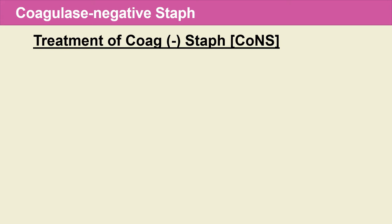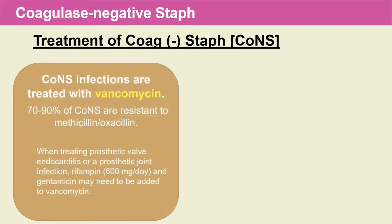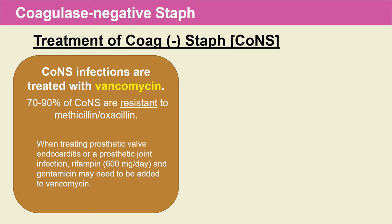How do we treat coagulase-negative staph infections? CoNS infections are treated with vancomycin because 70 to 90% of CoNS are resistant to the semisynthetic penicillins — methicillin and oxacillin. So whenever we get a CoNS infection, we need to resort to vancomycin. Also, when treating prosthetic valve endocarditis or prosthetic joint infection caused by CoNS, we need to add rifampin and gentamicin to the vancomycin.